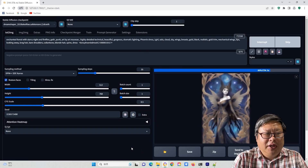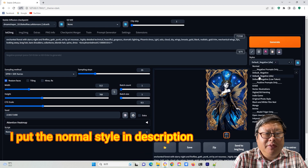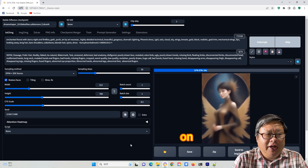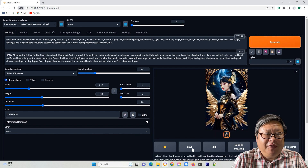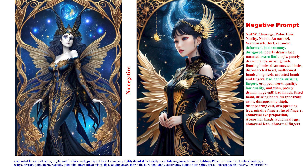Of course, the negative prompt can influence the image quite a lot. Fortunately, most of them are commonly used in most cases, such as disfigured, deformed, low quality, bad anatomy, pixelated, blurry, etc. We can put them together and add more if the generated image has some defect parts you want to improve. Adjust the sequence or add weight until it fits your desire.